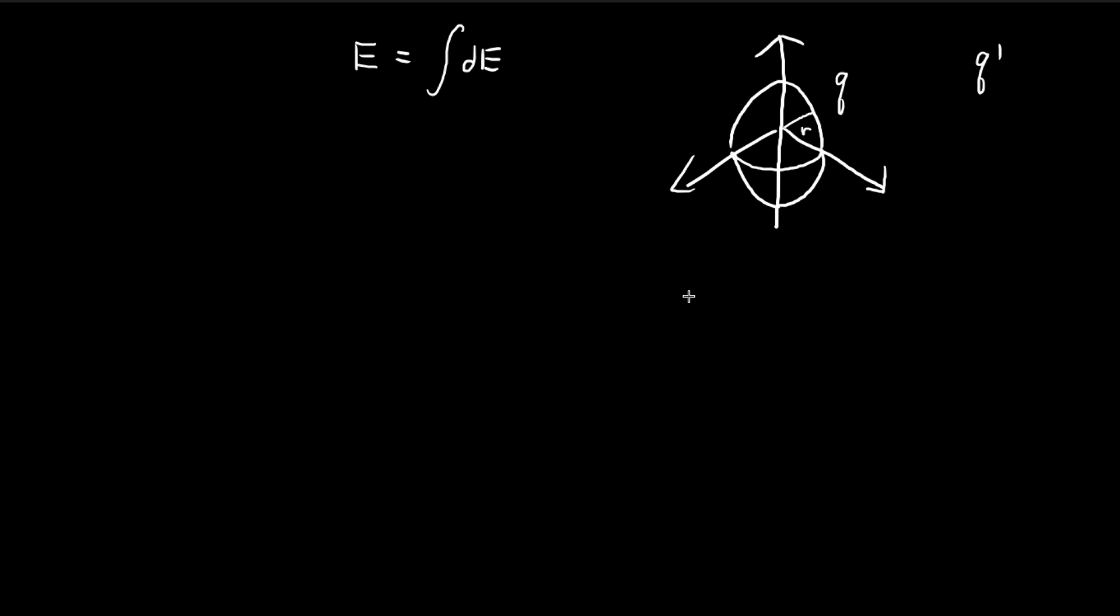So first thing we can notice is that because of Shell's theorem, we can actually treat this whole thing as a point charge if we're outside of the sphere. So because of that, the potential outside of the sphere is going to be equal to this. And then once we bring a charge, q prime, all the way to the surface, the amount of energy is going to be equal to this.